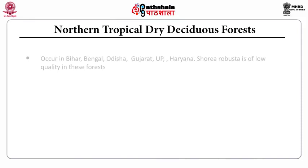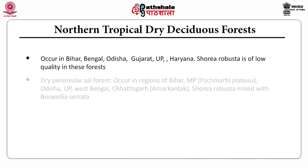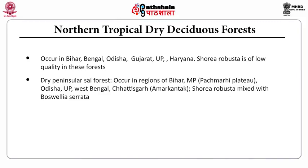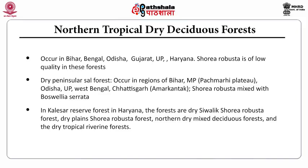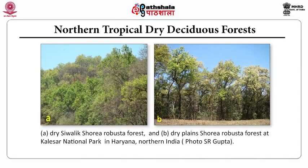The northern tropical dry deciduous forests occur in Bihar, Bhangar, Odisha, UP, and Haryana. Shorea robusta is of low quality in these forests. Dry peninsular sal forests occur in the region of Bihar, Madhya Pradesh, represented by Pachmarhi, Balaghat, Odisha, UP, West Bengal, and Chhattisgarh — that is Amarkantak National Park. Shorea robusta is mixed with Boswellia serrata. The dry deciduous forests in the Kalesar reserve forests in Haryana include dry Siwalik Shorea robusta and dry plains Shorea robusta forests, northern dry mixed deciduous forests, and dry riverine forests.